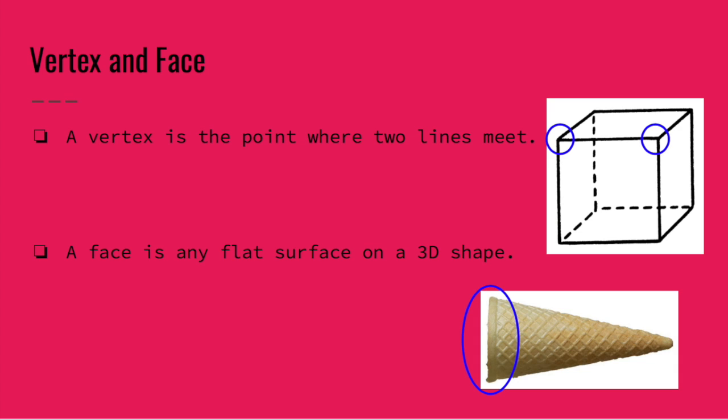Let's start by talking about a vertex. A vertex is the point where two or more lines meet. You can see here in my cube that lines are coming together and they're making a point or a corner. That point or corner is called a vertex.